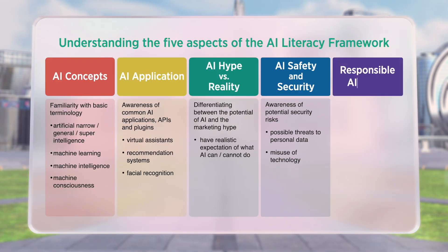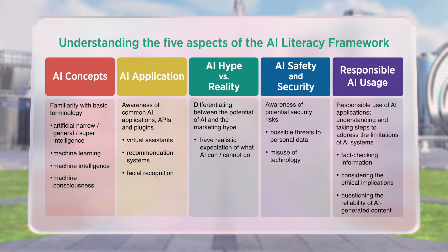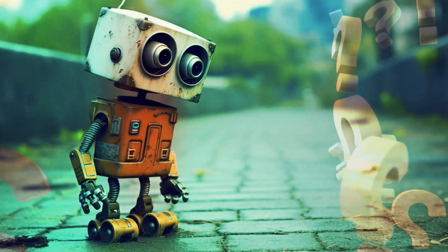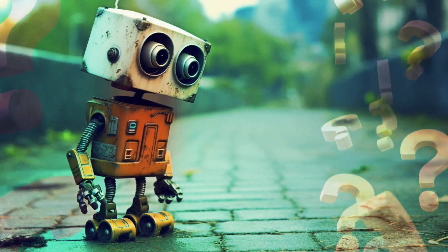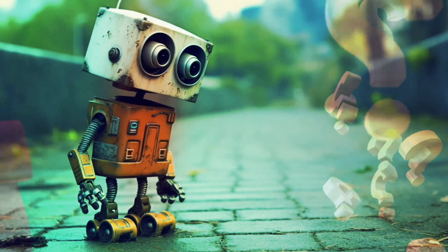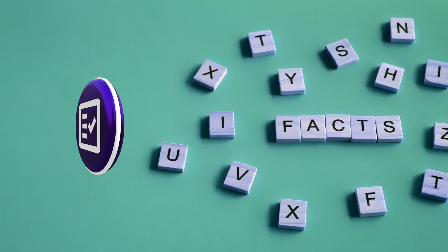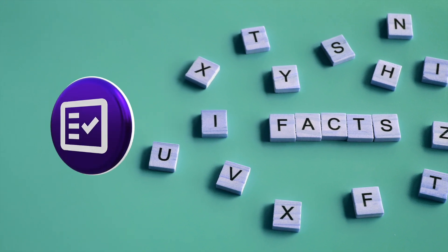Five, responsible AI usage: developing a sense of responsibility when using AI applications, understanding that AI systems may have limitations, and taking necessary steps to address those limitations — including fact-checking information, considering ethical implications, and questioning the reliability of AI-generated content.